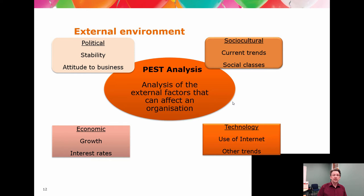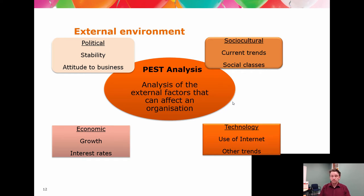The external environments — we see the PEST analysis making its return. We're looking for factors that could impact an organization. The political, economic, sociocultural, and technological environments are huge — you can spend a lifetime working in this area. In politics, what we're looking for is what impact the government's attitude will have. If the government comes out saying the economy is a disaster, that's going to hurt consumer confidence, discretionary spending goes down, and you don't want to be in a luxury goods market. If the government says everything's brilliant, you probably want to be in a small luxuries field because people are feeling confident.